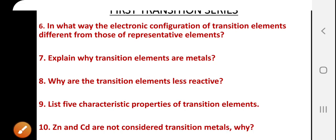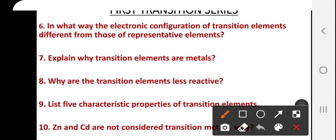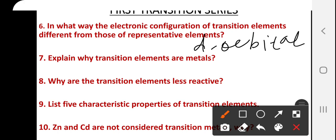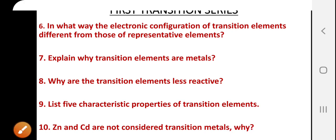Zinc and cadmium are not considered transition metals. Why? Transition elements are characterized by the presence of vacant or half-filled d orbitals. However, in the case of zinc and cadmium, they have completely filled d orbitals, and that is the reason they are normally not considered as transition metals. That's all for today — thank you for watching.